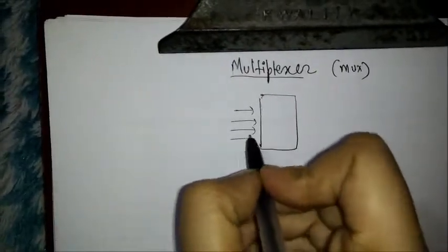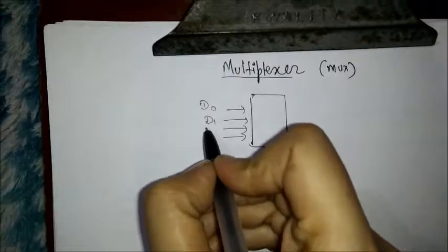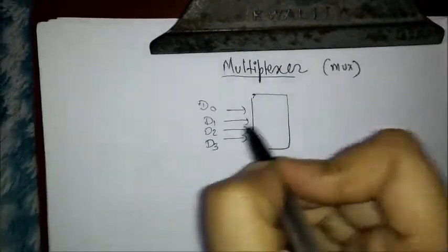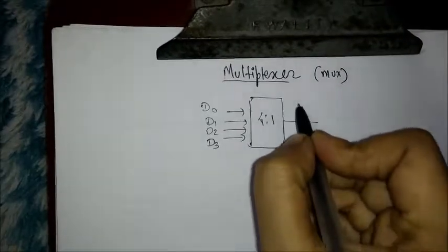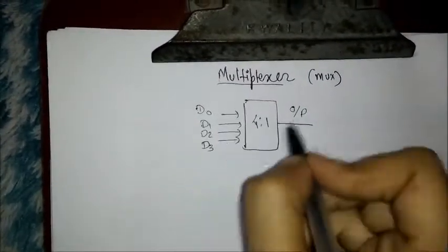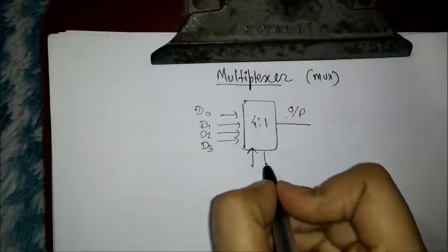For example, I have 4 input lines. Let the names of the input lines be D0, D1, D2, and D3. So this is a 4-to-1 MUX as we have 4 input lines and only 1 output line. In addition, we have 2 select lines.